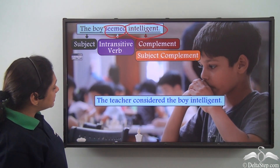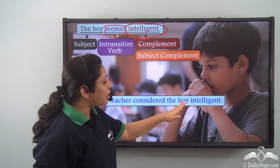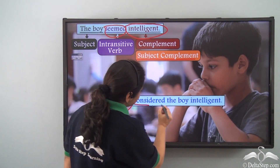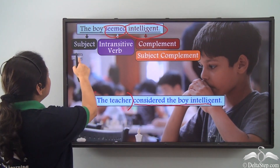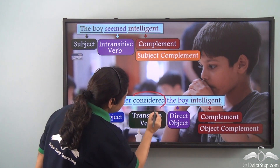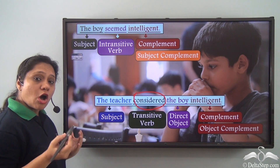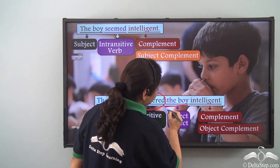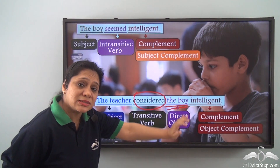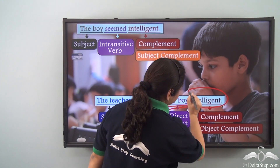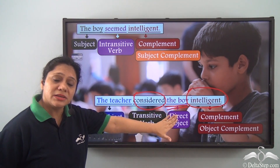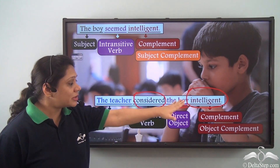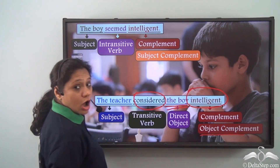In the second sentence, 'The teacher considered the boy intelligent,' the subject is 'the teacher' and the predicate is 'considered the boy intelligent.' The predicate has the transitive verb 'considered' which takes a direct object — 'the boy' — and it has a complement 'intelligent.' This complement is telling us more about the direct object, the boy. The teacher considered the boy what? Intelligent. So 'intelligent' here is an object complement.